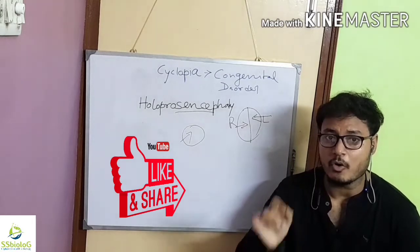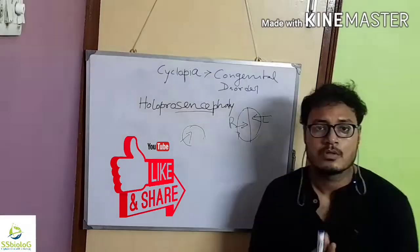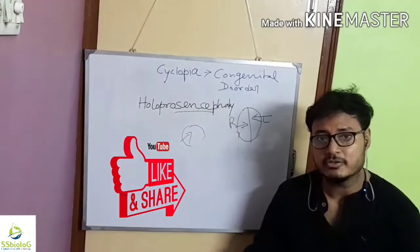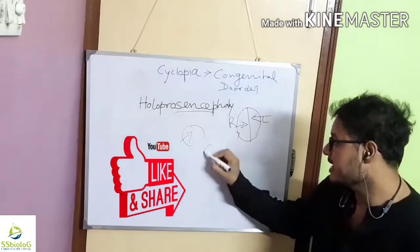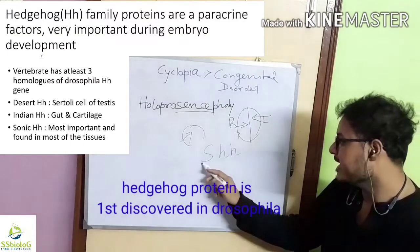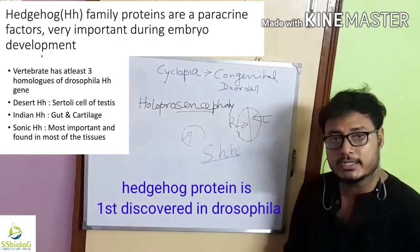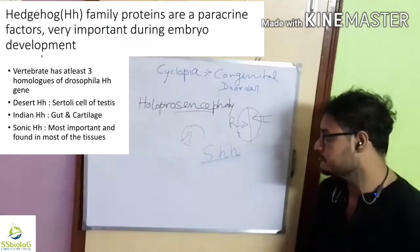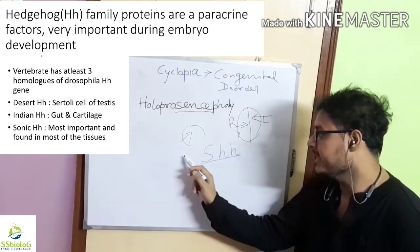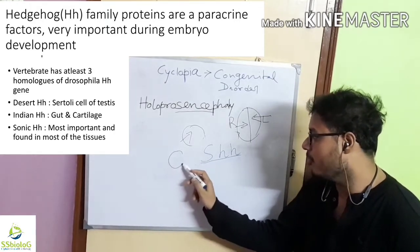Now the question arises: why does cyclopia develop? The answer to the question is sonic hedgehog signaling. Sonic hedgehog signaling is very important during the developmental period. The sonic hedgehog is involved in the separation of single eye field into two bilateral eye fields.